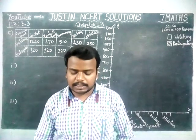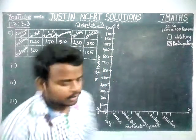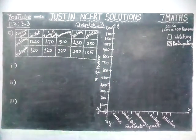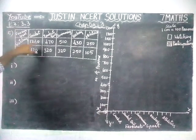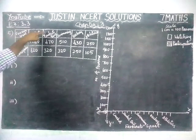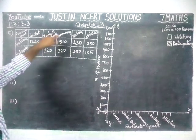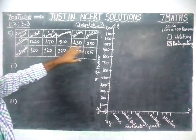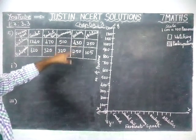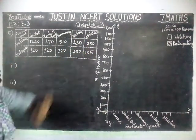The question is: consider this data collected from a survey of a colony. The given favorite sport, watching and participating. For cricket: 1240 and 620. Basketball: 470 and 320. Swimming: 510 and 320. Hockey: 430 and 250. Athletics: 250 and 105.